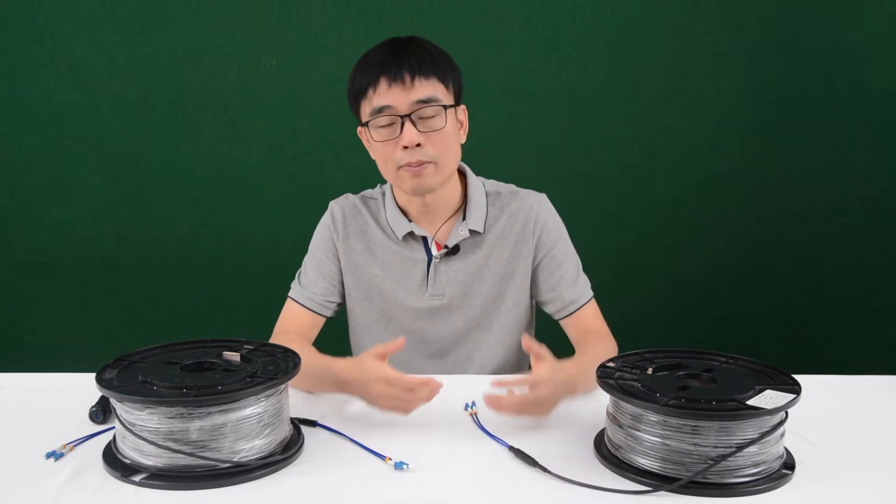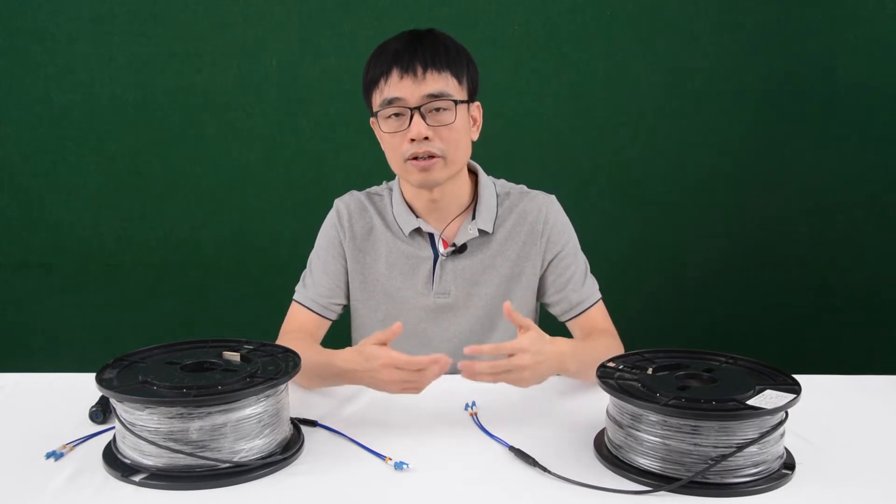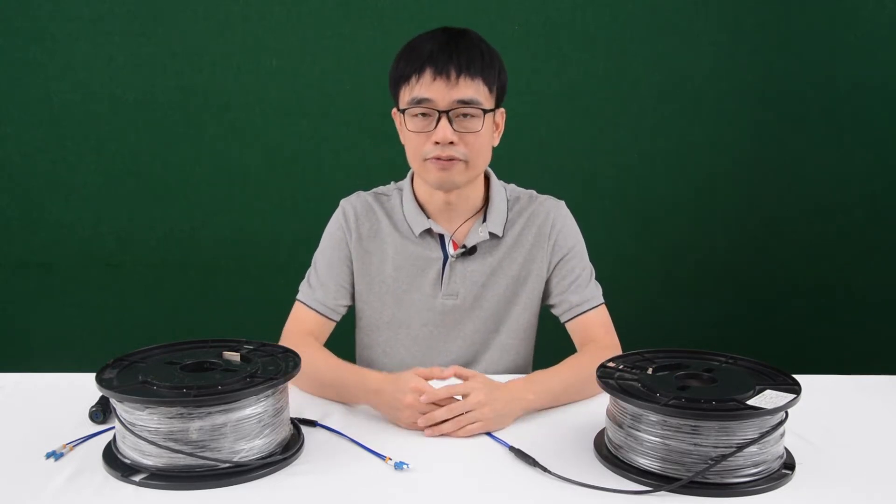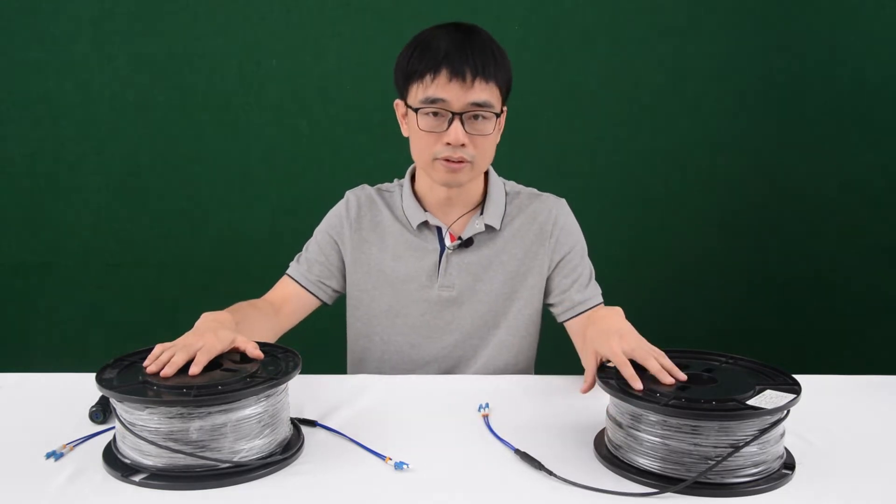But usually, the pre-made fiber optic cable comes with a fixed length like this one. It's about 300 feet. What if you need longer than 300 feet? The field solution is to connect another pre-made fiber optic cable with this one, to get longer length.